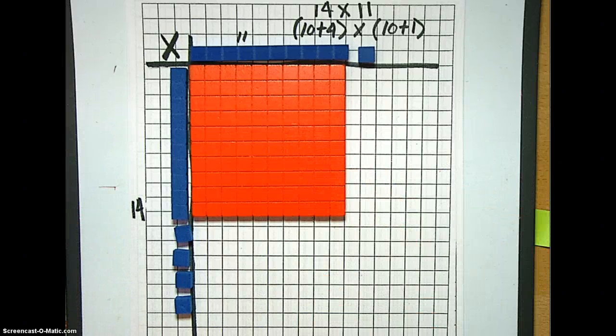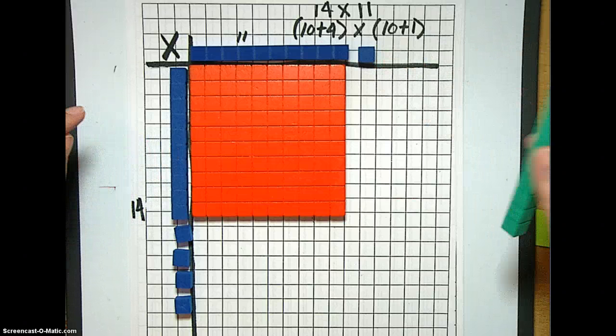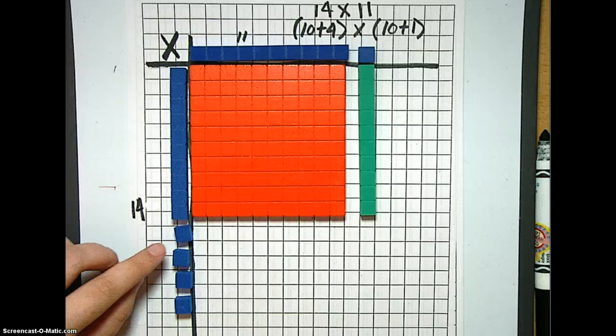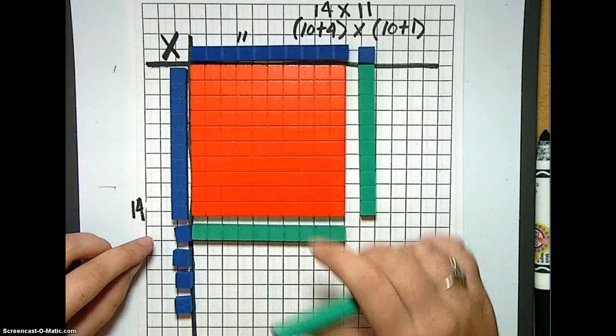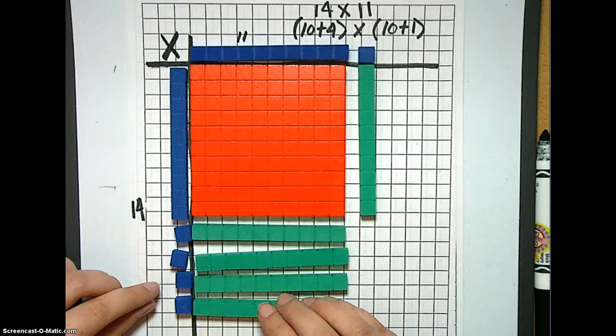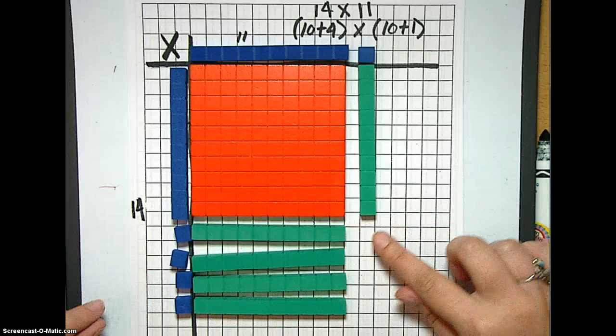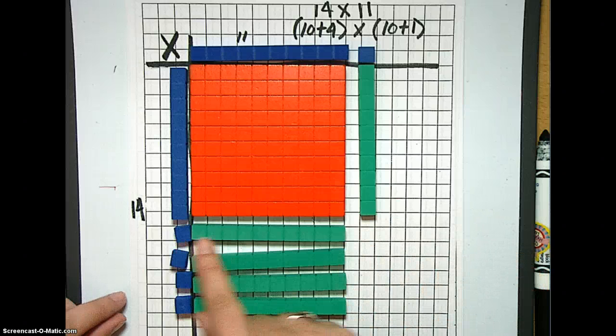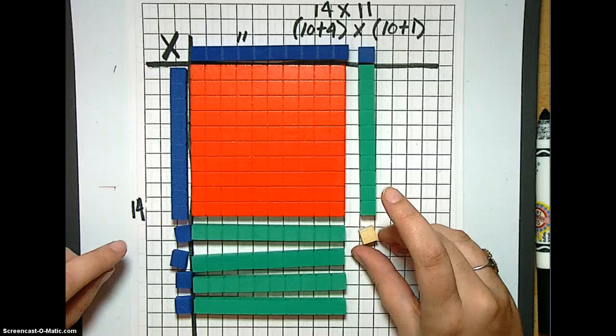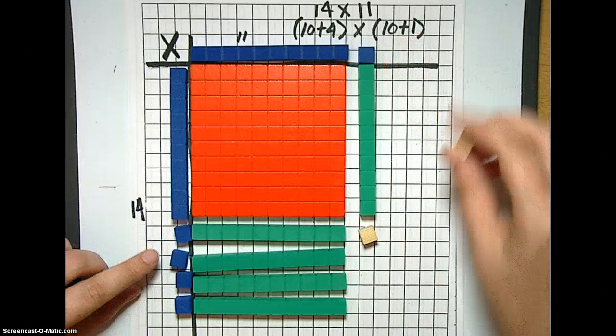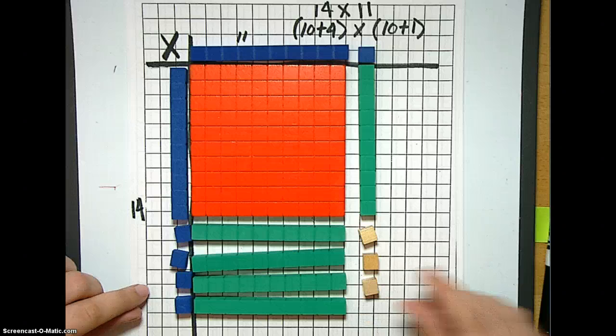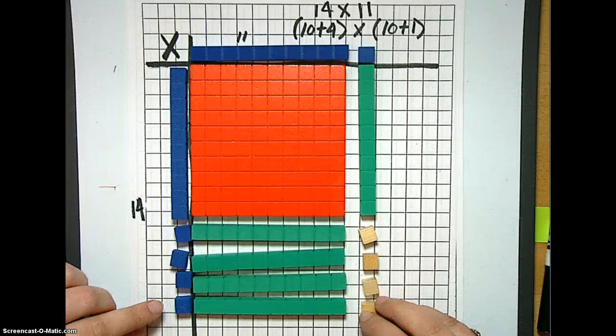All right. So we're going to keep going. Now we have a 10 over here and a 1 over here. So let's just fill that space in, too. There we go. And the same for down here. Let's fill this in. So that's 10 times 1, which is 10. Another 10 times 1. And another 10 times 1. And another 10 times 1. Then we get over here to this little space. And if we look and we go across, we have a 1 times a 1. And a 1 times a 1. And a 1 times a 1. And a 1 times a 1. And then one more. 1 times 1.